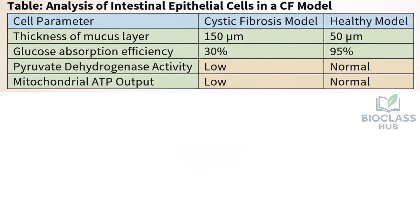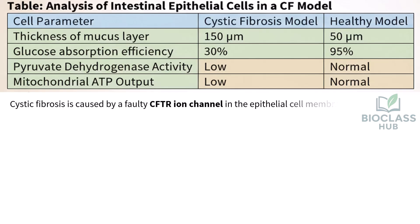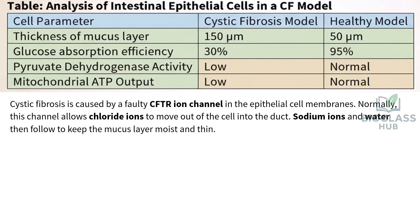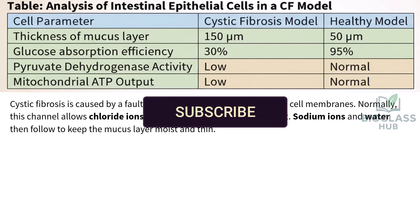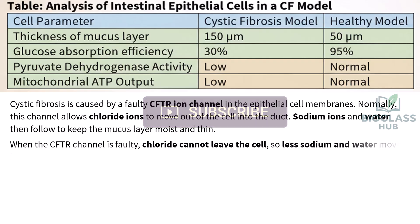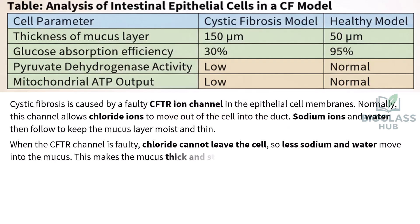Part A. Cystic fibrosis is caused by a faulty CFTR ion channel in the epithelial cell membranes. Normally, this channel allows chloride ions to move out of the cell into the duct. Sodium ions and water then follow to keep the mucus layer moist and thin. When the CFTR channel is faulty, chloride cannot leave the cell, so less sodium and water move into the mucus, making the mucus thick and sticky.